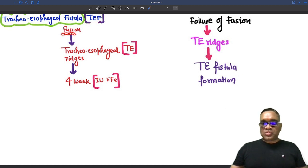Normally, fusion of tracheoesophageal ridges occurs by the age of 4 weeks intrauterine life. And whenever there is a failure of the fusion of these tracheoesophageal ridges, that will result in the fistula formation and that will be called as tracheoesophageal fistula.